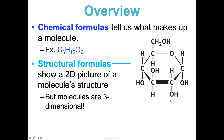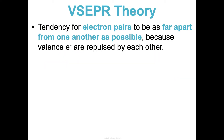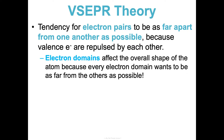We introduced VSEPR theory in Concept 4. It helps us predict the shape of molecules. VSEPR stands for valence shell electron pair repulsion, and it's often referred to as the electron domain theory. What it states is that electron pairs tend to be as far apart from one another as possible because valence electrons are repulsed by each other. This is affected by electron domains, which affect the overall shape of the molecule.